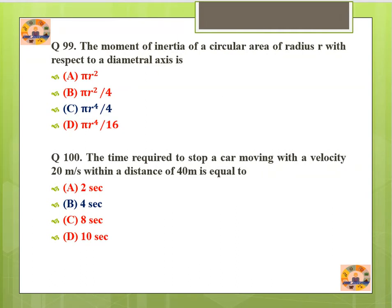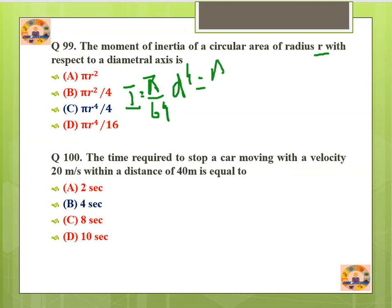Question number 99: The moment of inertia of a circular area of radius r with respect to a diametral axis. We know I = (π/64)*d⁴. Substituting d = 2r, the answer becomes π*r⁴/4.